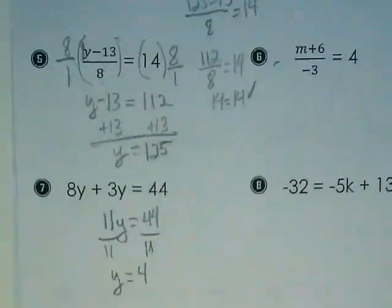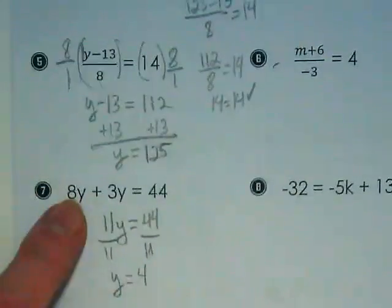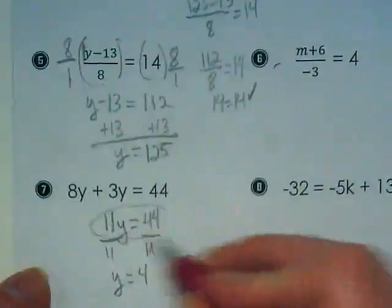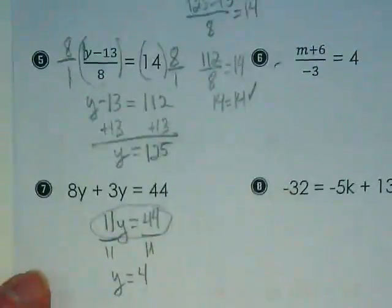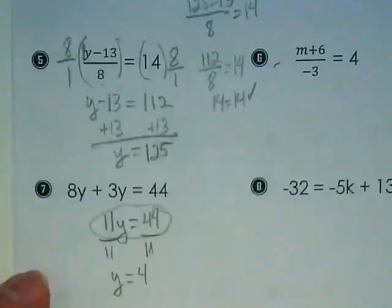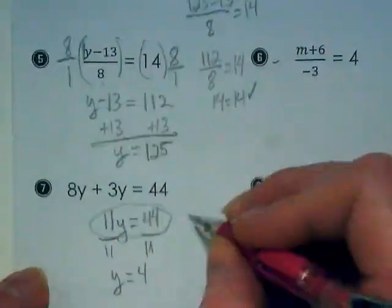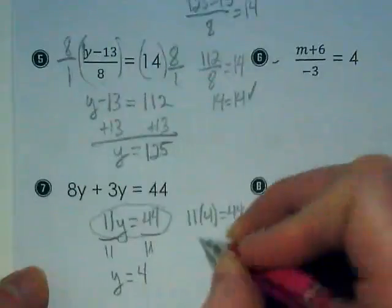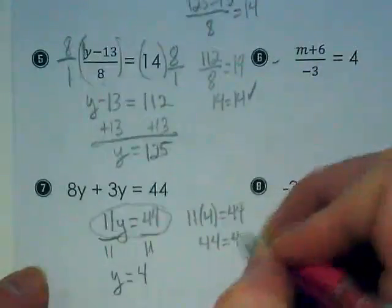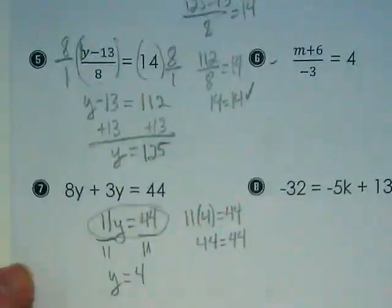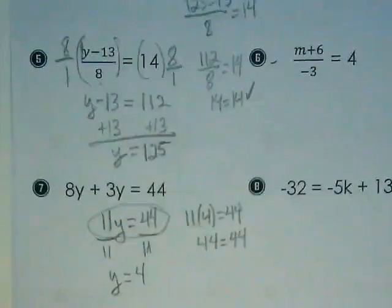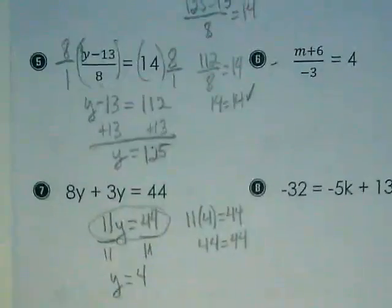Now, there's two ways I could check this. I could go back, and I could put 4 in here and 4 in here. Or I could go to this part of it, which would be easier because they're already combined, right? So I could say 11 times 4 is equal to 44. And it is. Okay, I'm going to stop now, and I want you to work on 6 and 8 on your own, and we'll continue.